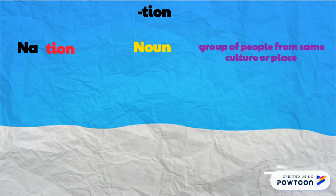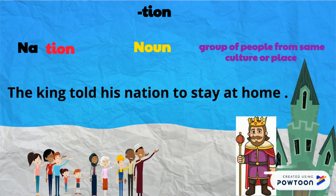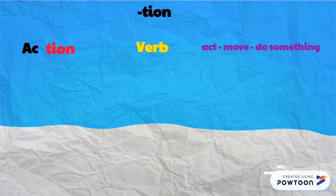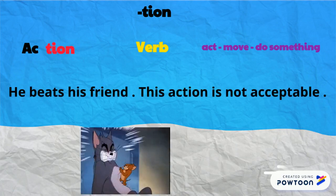Nation. 'Nation' is a noun which means a group of people from the same culture or place. Let's make a sentence: the king told his nation to stay at home. Action. 'Action' is a verb which means to act, move, or do something.